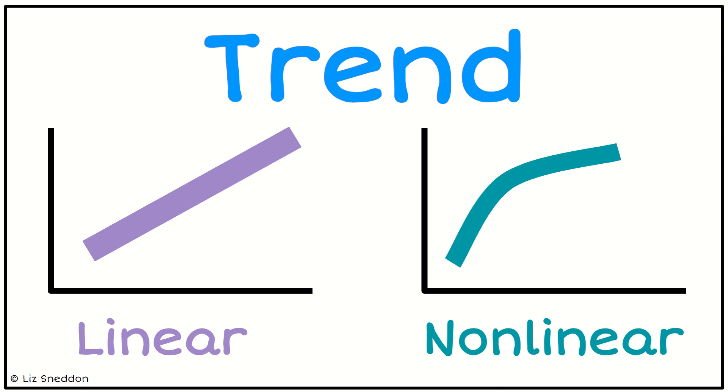However, if we do have some kind of trend pattern, what we want to do is identify whether it's a linear or a non-linear pattern. So linear means it's going in a line, like a straight line, and non-linear some kind of curve.